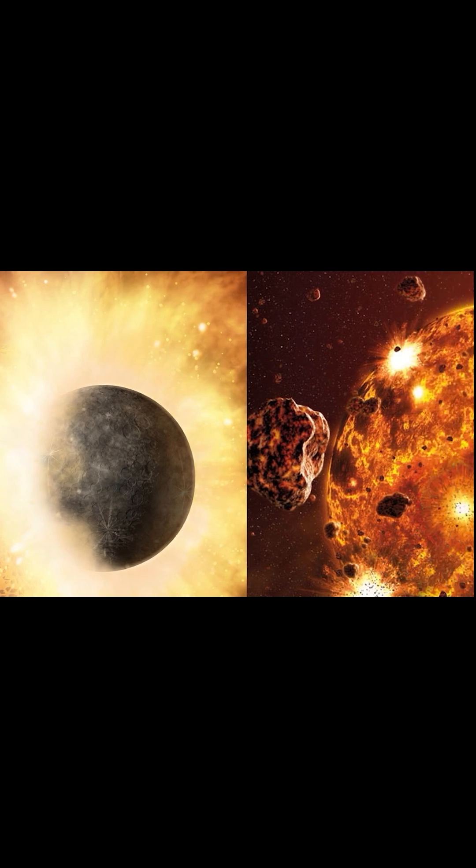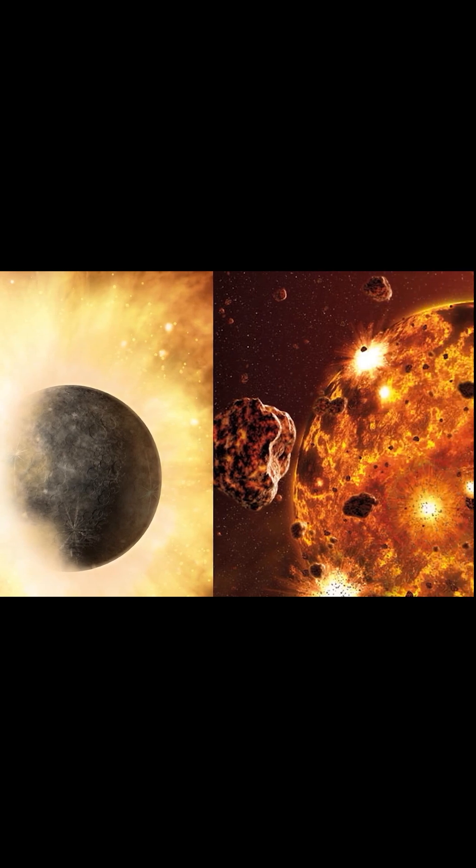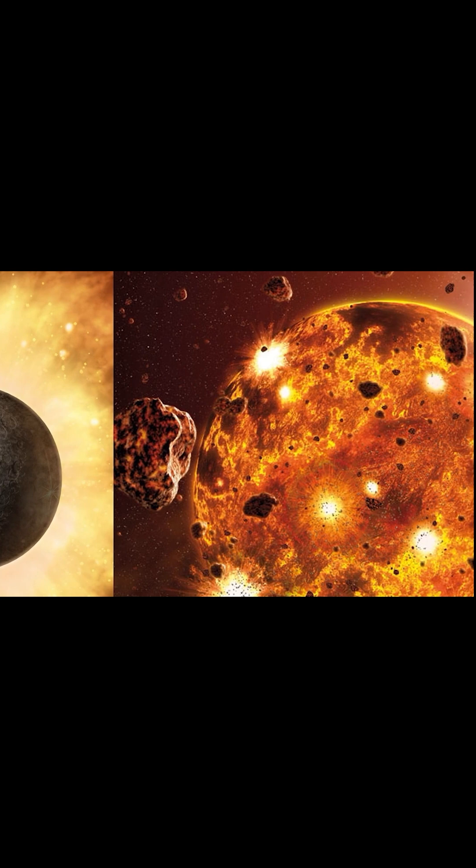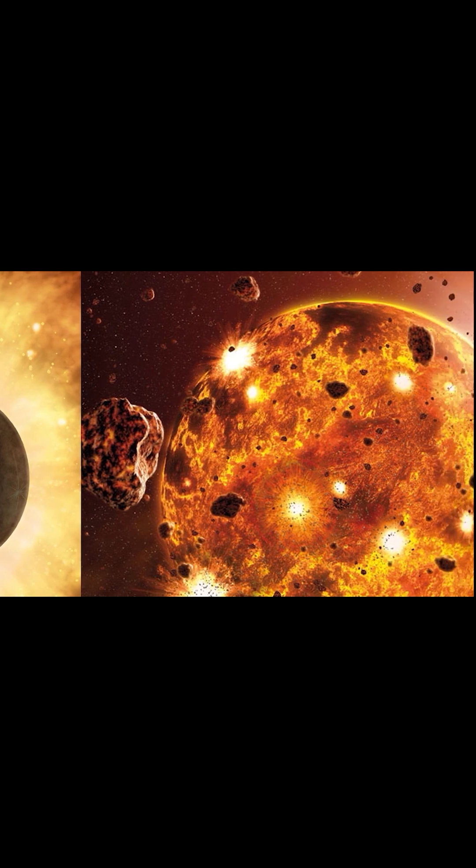Another theory is the collision theory, which suggests that Mercury formed from the remnants of a larger planet that was destroyed in a massive collision with another body early in the solar system's history. According to this theory, the collision stripped away much of the planet's mantle and outer layers, leaving behind a smaller, dense core that eventually became Mercury.